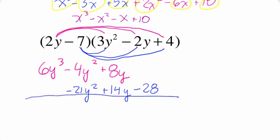Now when you see this, we actually can combine like terms, but it's in a more easy to see manner. 6y cubed, as there's no like terms there. But here my like terms are with my y squareds. Negative 4y squared minus 21y squared is negative 25y squared. And now I have plus 8y plus 14y. That gives me plus 22y. And then minus 28.